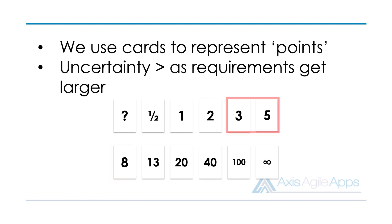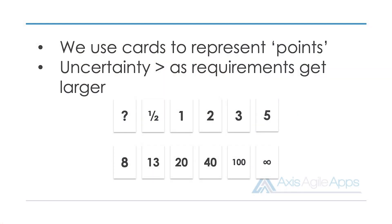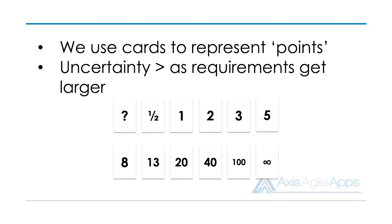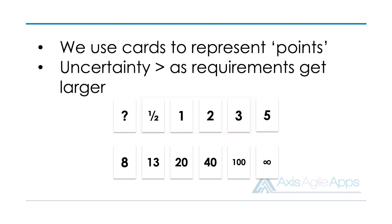By having this Fibonacci sequence, the numbers get wider and wider apart, indicating that we lose precision around our estimates the larger our requirements get. For a smaller requirement, you can be much more precise — it could be one point, two points, or three points. For a really large requirement that's going to take a long time, you have to be less granular and pick from either 20 points, 40 points, or a hundred points.